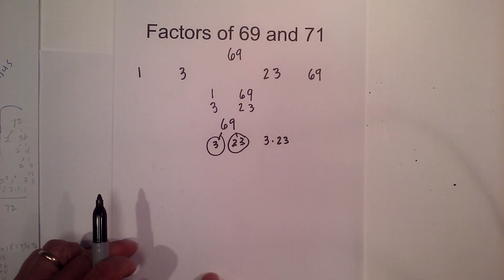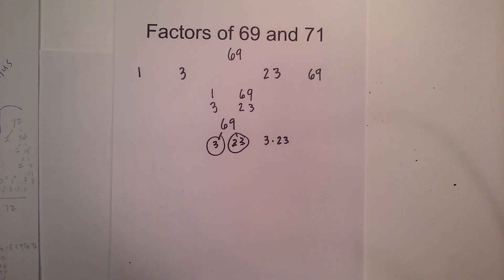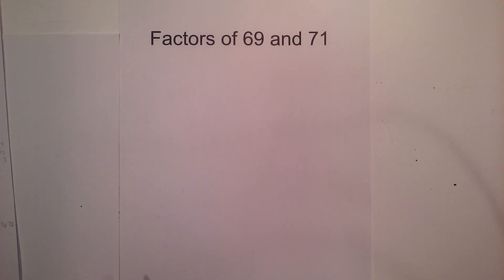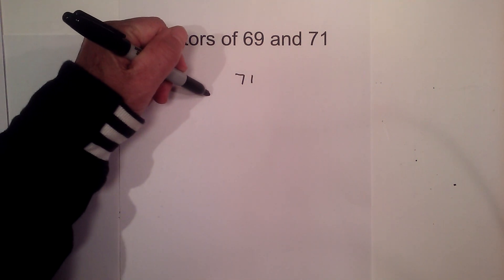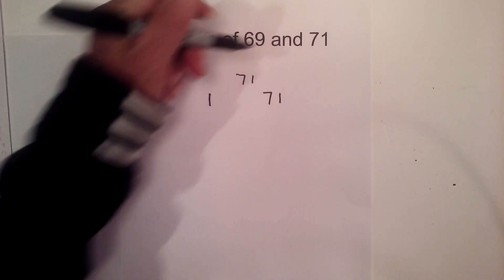So now let's look at 71. Okay, the factors of 71 will not take long because it is prime, so they are 1 and 71.